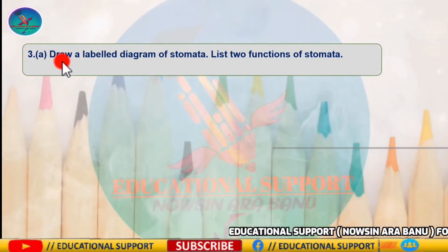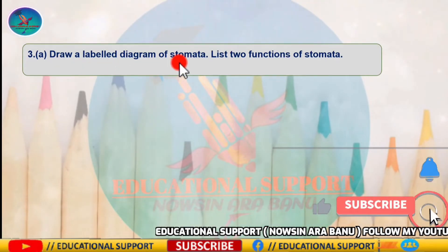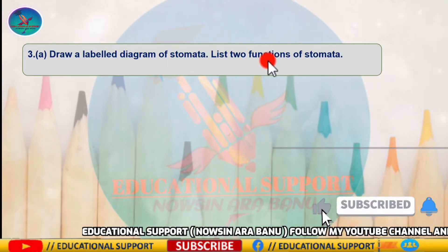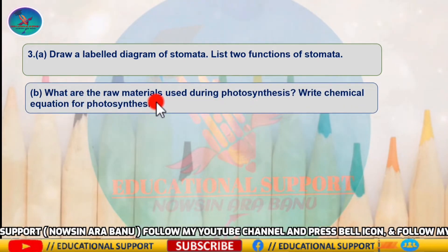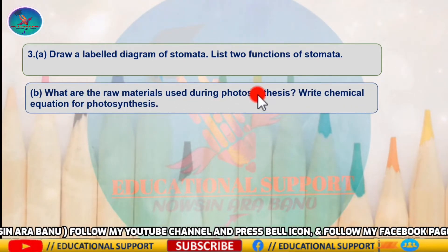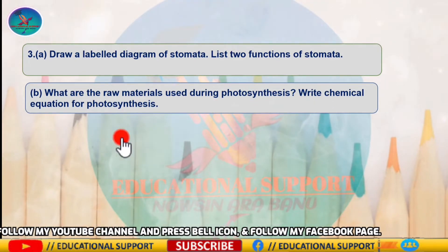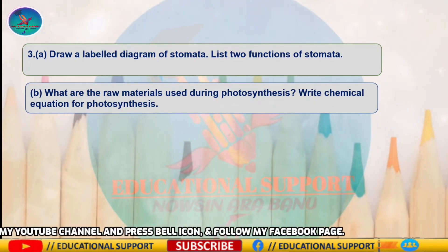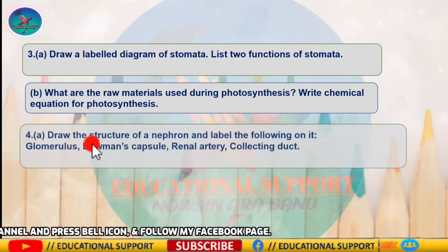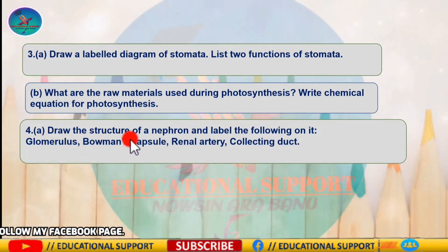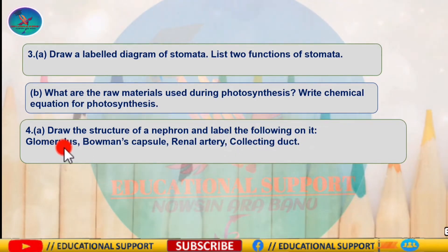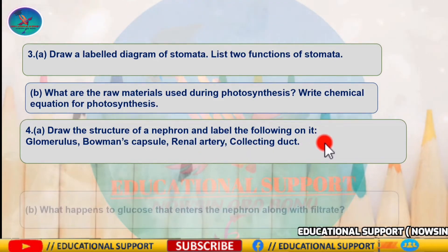Question three A: draw a labelled diagram of stomata and list its functions. Question three B: what are the raw materials used during photosynthesis? Write the chemical equation for photosynthesis. Question four A: draw the structure of a nephron and label the following — glomerulus, Bowman's capsule, renal artery, and collecting duct.